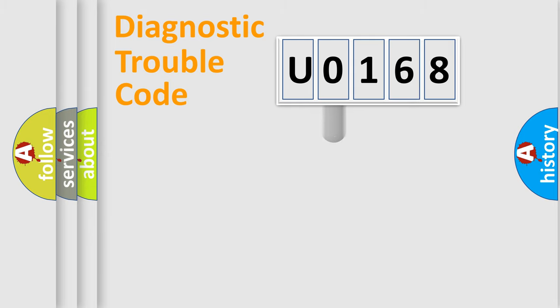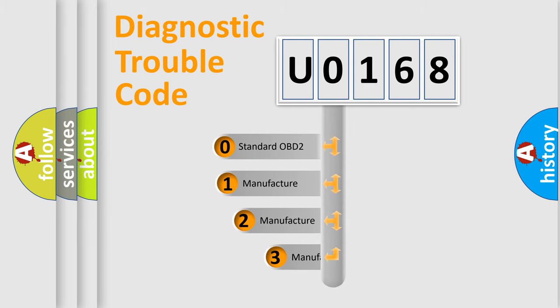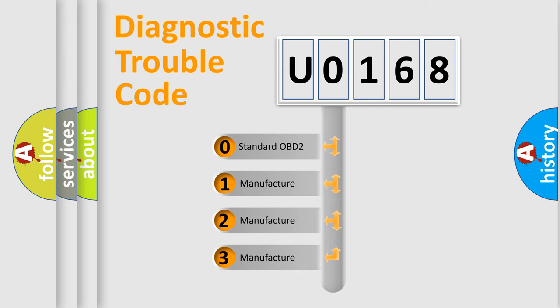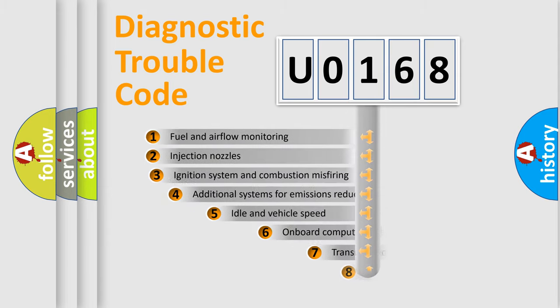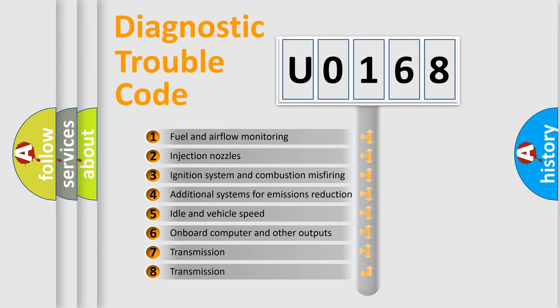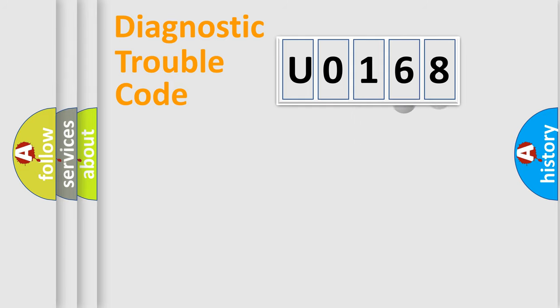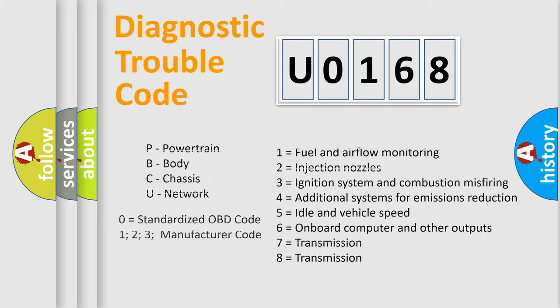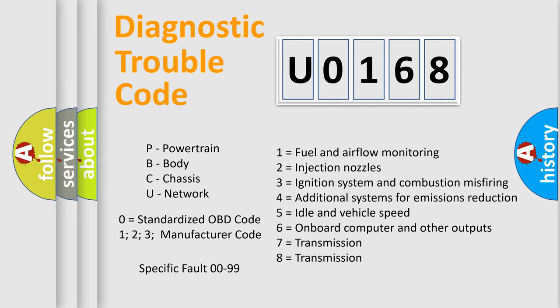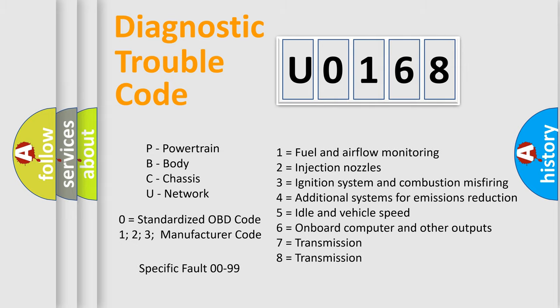This distribution is defined in the first character of the code. If the second character is expressed as 0, it is a standardized error. In the case of numbers 1, 2, or 3, it is a manufacturer-specific error expression. The third character specifies a subset of errors. This distribution is valid only for the standardized DTC code, and only the last two characters define the specific fault of the group. This division applies only when the second character code is expressed by the number 0.